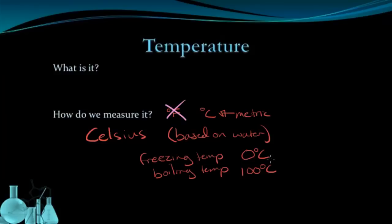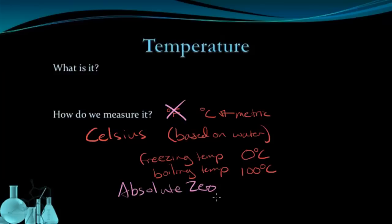Let's talk about what these temperatures represent. We know that 0 is based on the freezing temperature and 100 is based on the boiling temperature, but they measure kinetic energy. So 0 should have less kinetic energy than 100. And we can go negative — we have negative temperatures, so we can keep getting lower and lower. Lower temperatures should have lower kinetic energies. We should theoretically hit a point where the kinetic energy is 0, and the temperature where kinetic energy is 0 we call absolute zero. Based on overwhelming experimental evidence, absolute zero should occur at negative 273.15 degrees Celsius.